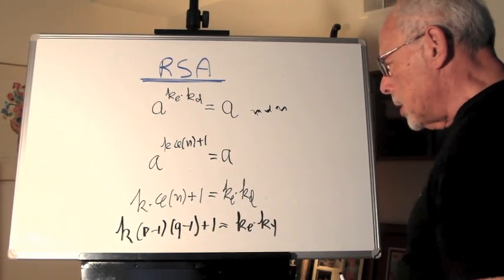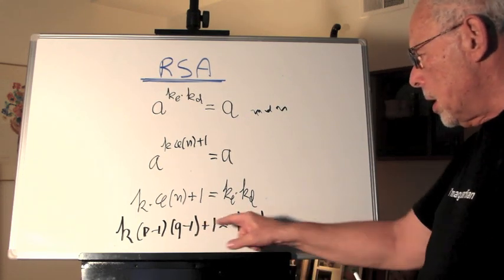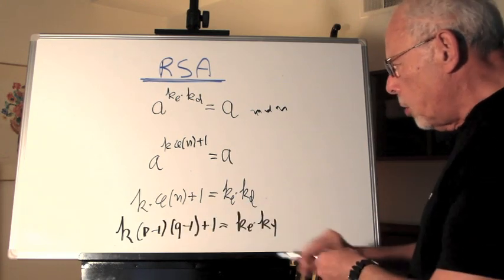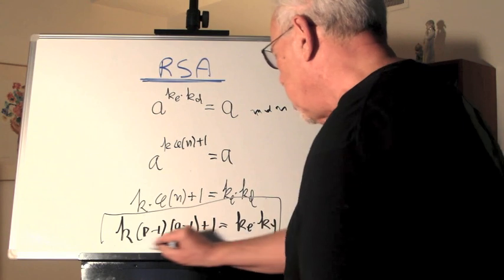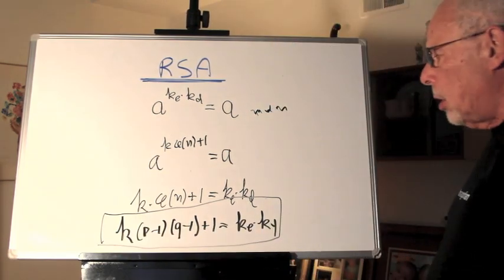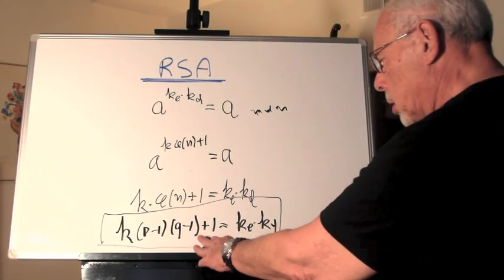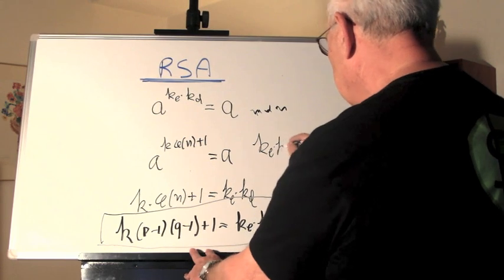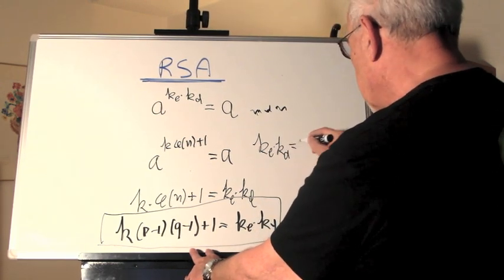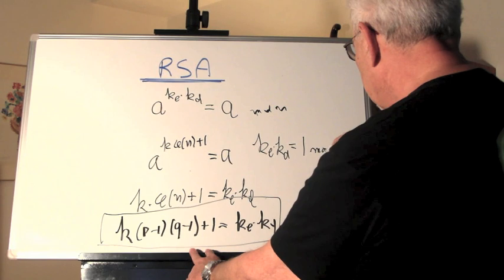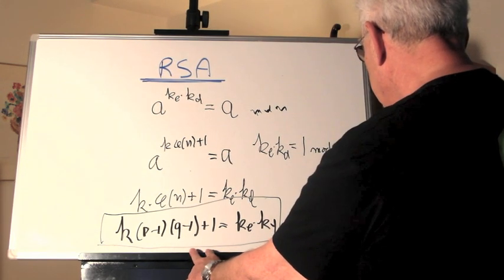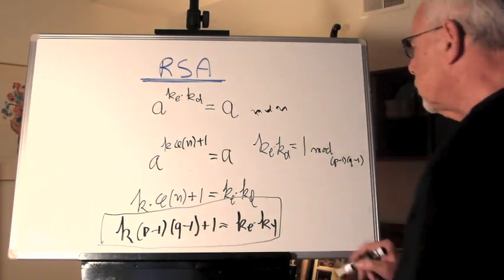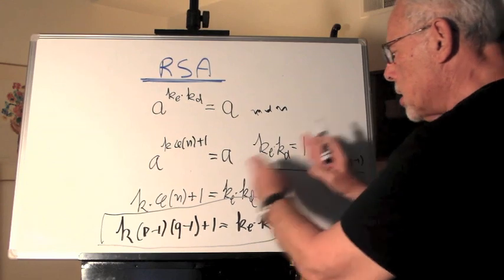Now, what do we do with this? When you look at this, you say, hey, this equation here, which we just have written, can be written in modular language. Which is what? It says that KE KD equals 1 mod of P minus 1, Q minus 1. That is the same as this.